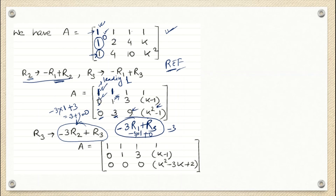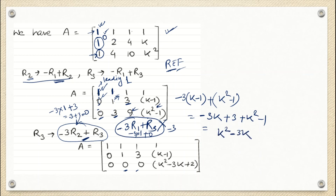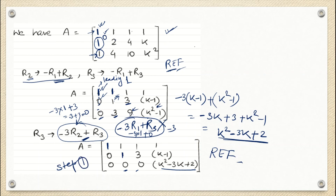Applying −3R2 + R3: the first element gives −3×1 + 3 = 0, the second gives −3×0 + 0 = 0, the third gives −3×3 + 9 = −9 + 9 = 0, and the fourth gives −3×(K−1) + (K²−1) = −3K + 3 + K²− 1 = K² − 3K + 2. So the new row 3 becomes [0, 0, 0, K²−3K+2], and we have reached row echelon form.